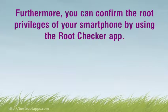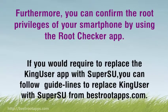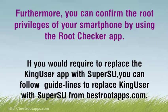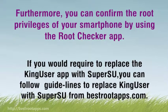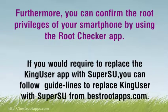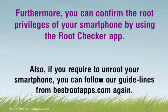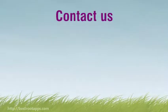You can confirm the root privileges of your smartphone by using the Root Checker app. If you want to replace the Kinguser app with SuperSU, you can follow the guidelines to replace Kinguser with SuperSU from bestrootips.com. Also, if you need to unroot your smartphone, you can follow the guidelines from bestrootips.com. If you have any issues following this rooting procedure, let me know via the comments. Thank you.